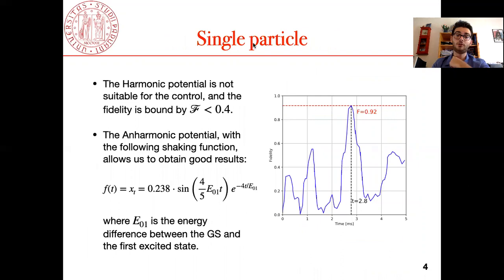We see immediately that in the single particle case with the harmonic potential we do not obtain good results, with the fidelity bounded by 0.4. In the anharmonic case instead we obtain really good results using this shaking function which is an exponentially damped sine, where E01 is the energy gap difference between the first excited and the ground state. We see we reach up to 0.92 fidelity to a maximum of one.